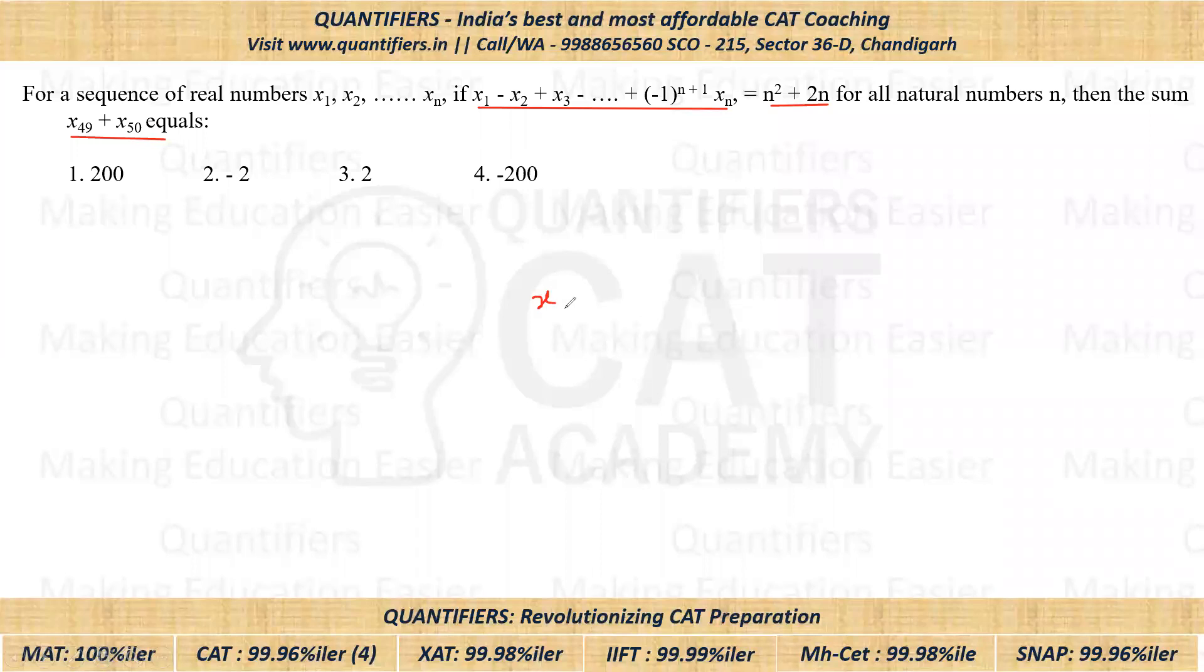So if I put n is equal to 49, we get x₁ minus x₂ plus x₃ and so on. Now all of you can see that with odd terms, we are getting a positive sign. So we have put n is equal to 49. So x₄₉ positive sign. This is equal to 49 square plus 2 times 49.